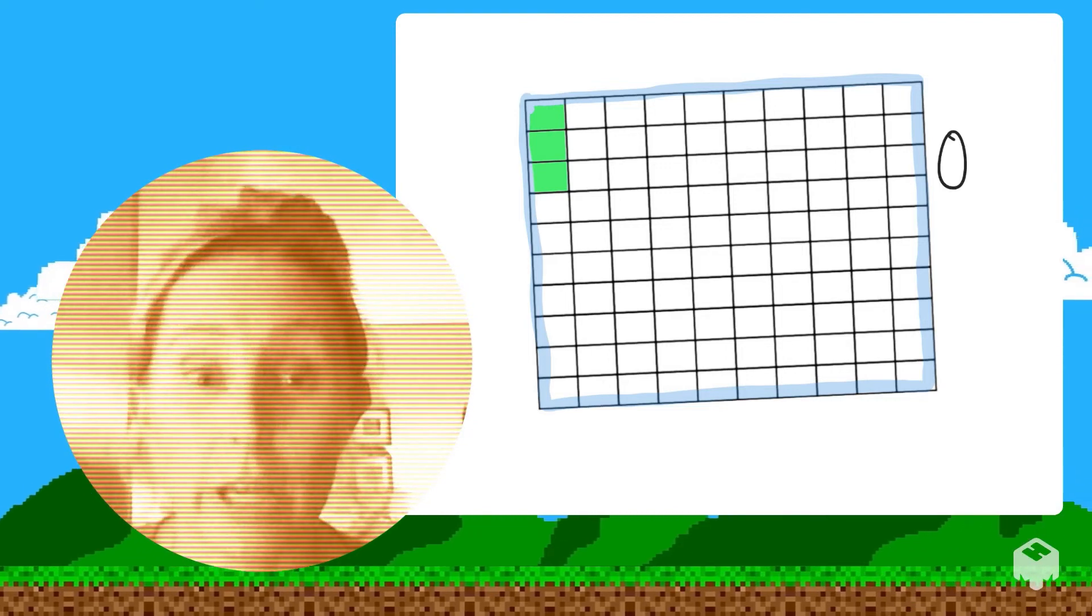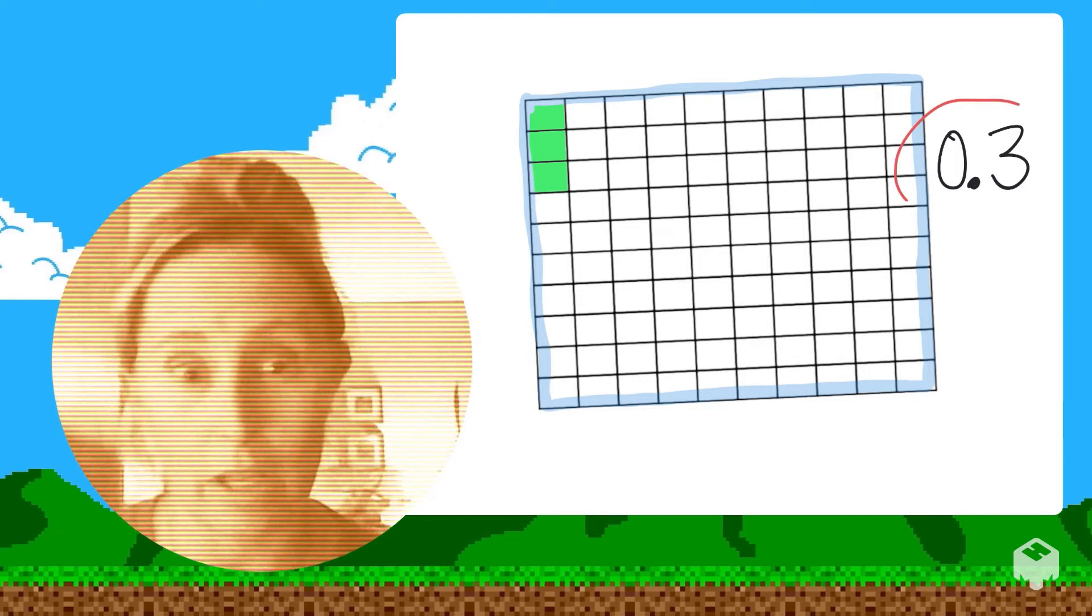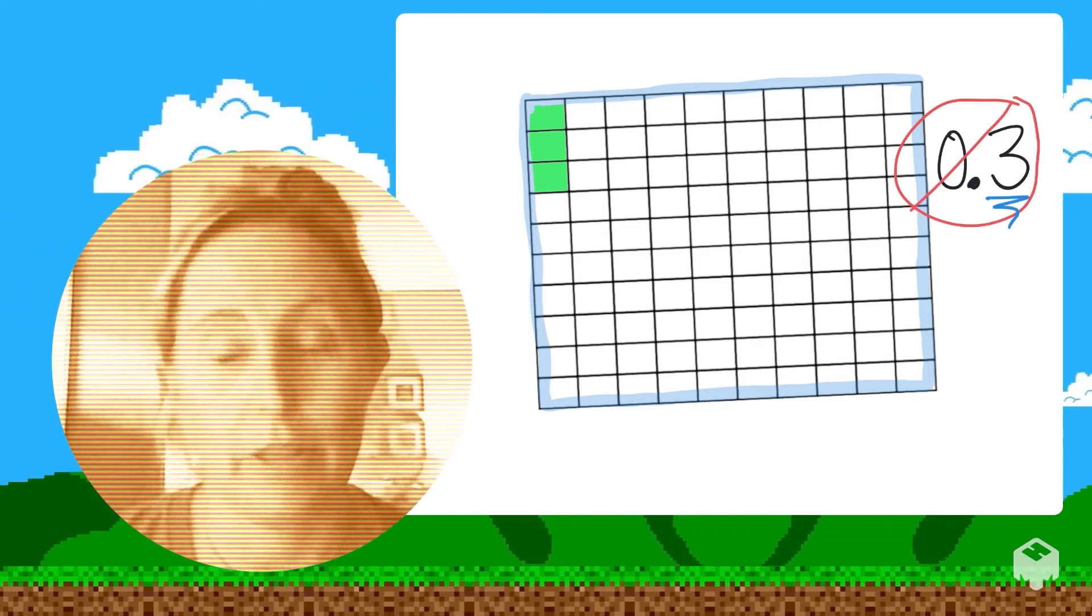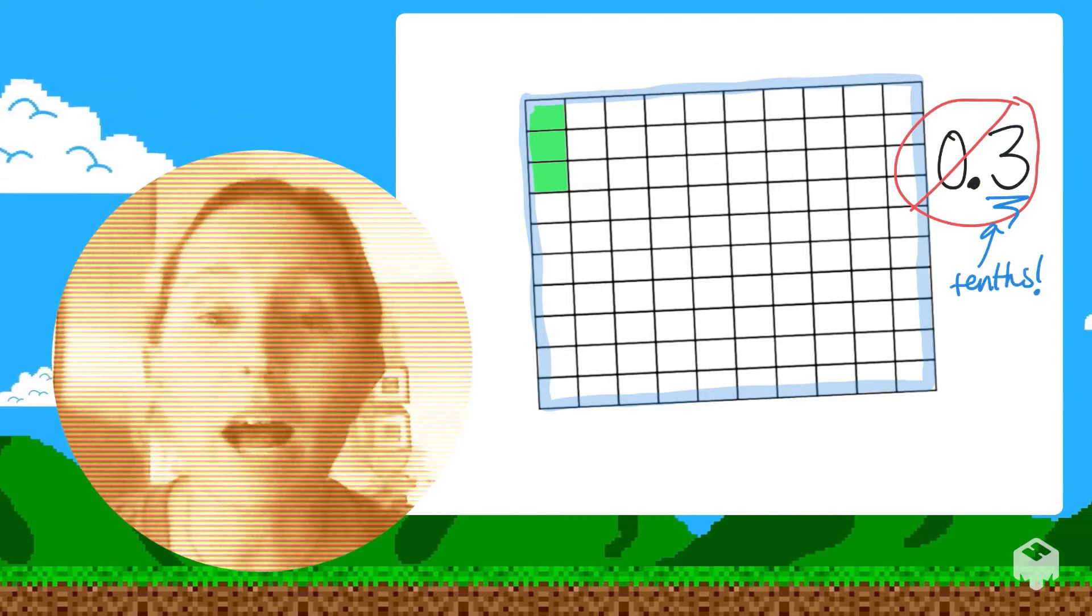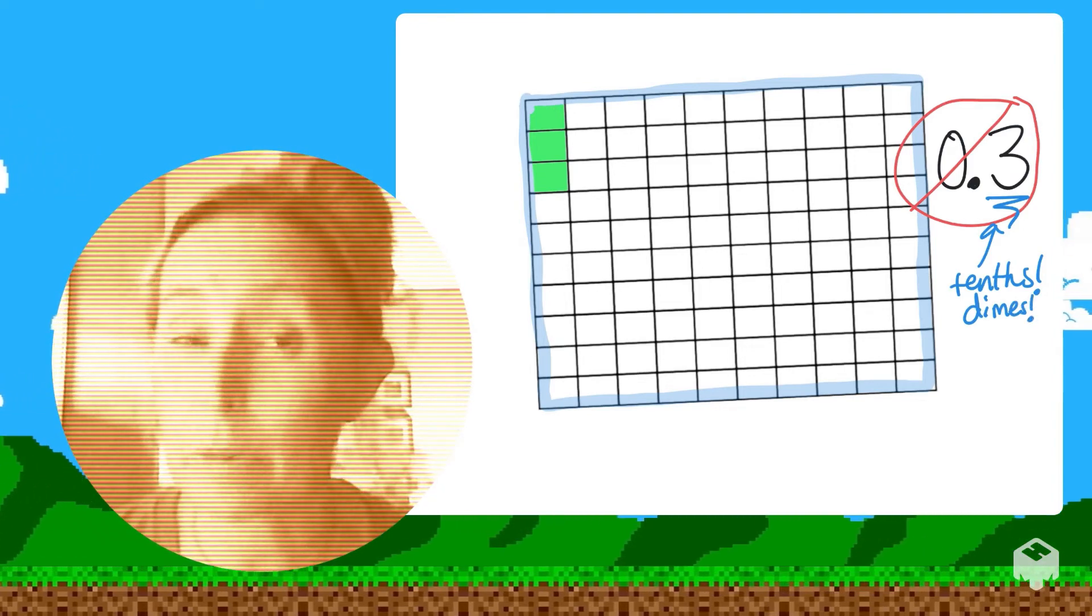It's not three tenths because that is three tenths, and we do not have three tenths. We do not have three dimes. We only have three pennies.